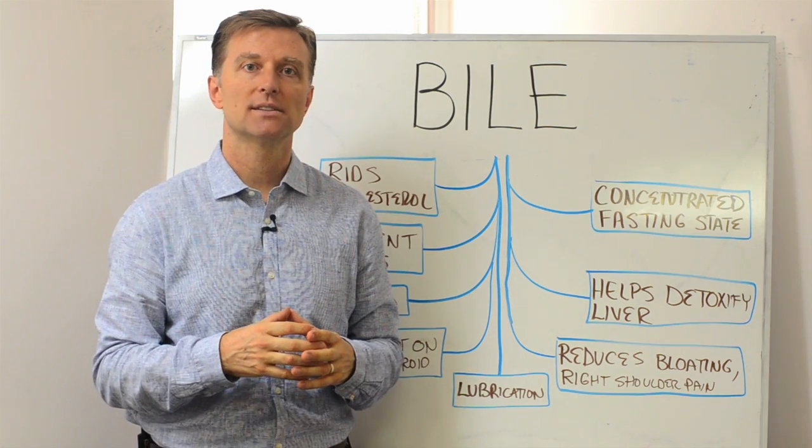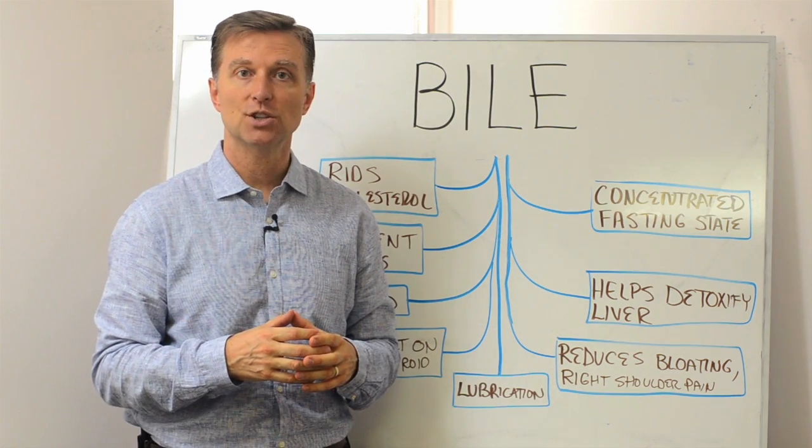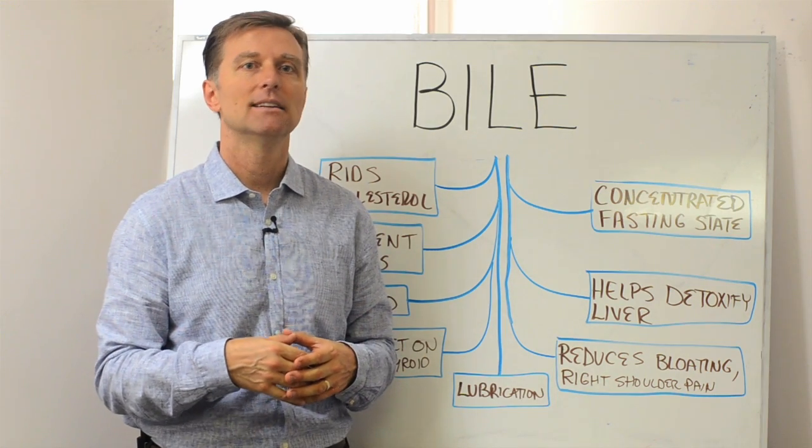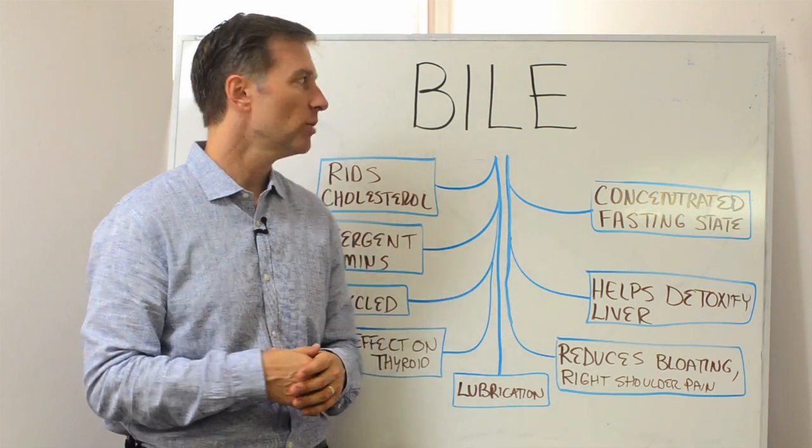Now the pancreas can release its enzymes, specifically the one that dissolves fat called lipase, and it acts on that fat even further to break it down into small particles. So then you can start utilizing these fats to replace body tissues, nerve system, the brain, cell, skin, things like that.